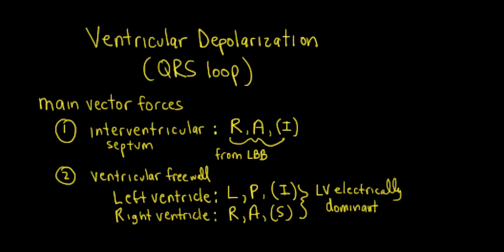Let's review the main vector forces. The first force is the interventricular septal forces that spread in the rightward, anterior, and inferior orientation from arborizations coming off the left bundle branch. The second main force is the ventricular free wall forces, divided into left and right ventricle forces, with the left ventricle being electrically dominant in the leftward and posterior orientation, and somewhat variable — here written as inferior — in the frontal plane. Note that the ventricular basal forces are not shown and will not be discussed in this video.